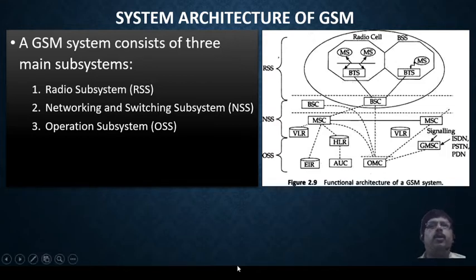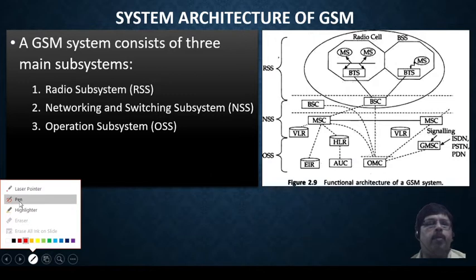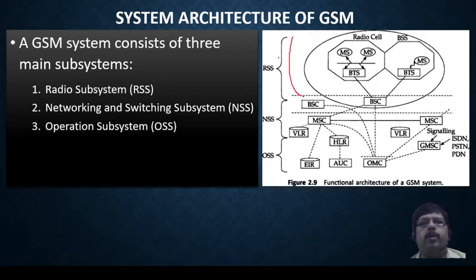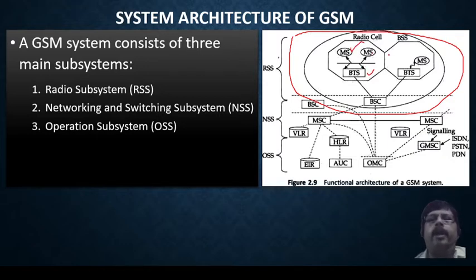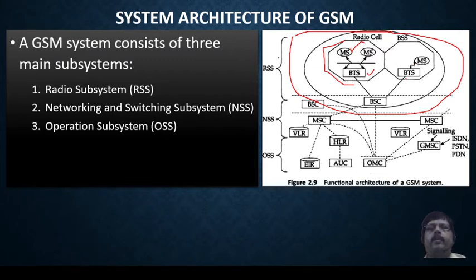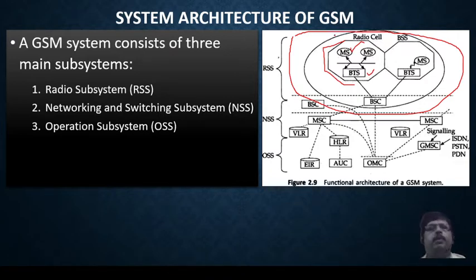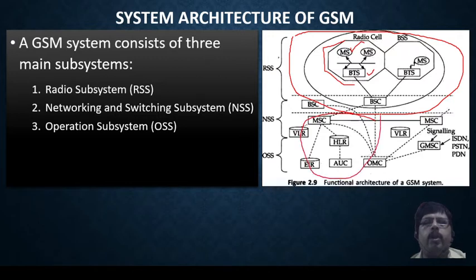The first section is the Radio Subsystem — you can see it marked here. We have BTS, which is what we call the tower, and MS, which are our mobile stations — the handsets. This BTS forms one cell, and like that there are multiple cells. Each of these cells is connected with the BSC. This topmost part of the GSM architecture is called the Radio Subsystem, or RSS.